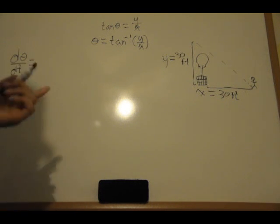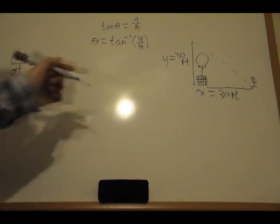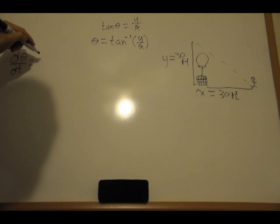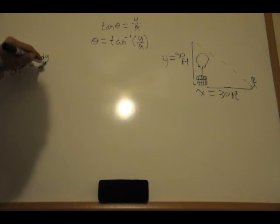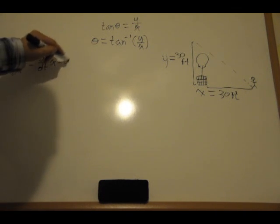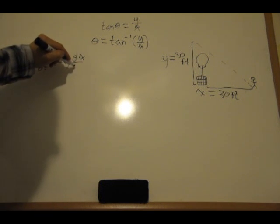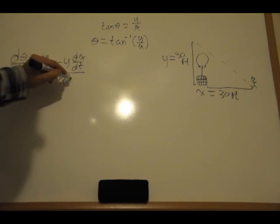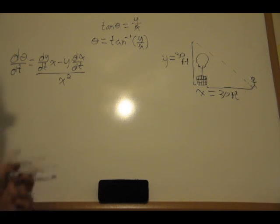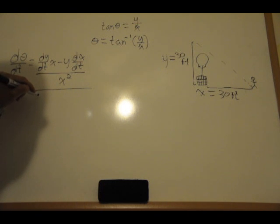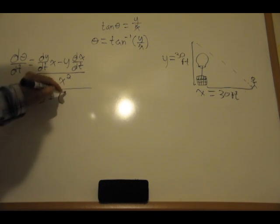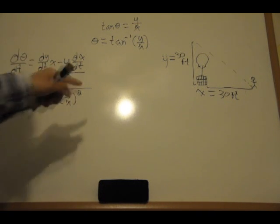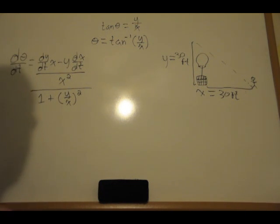The derivative of inverse tangent is u-prime divided by one plus u-squared. Here u equals y/x, so u-prime by the quotient rule is: the derivative of y with respect to time times x, minus y times the derivative of x with respect to time, all divided by x-squared. That entire expression is u-prime divided by one plus u-squared.